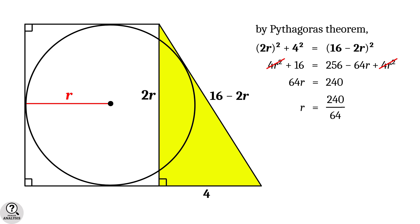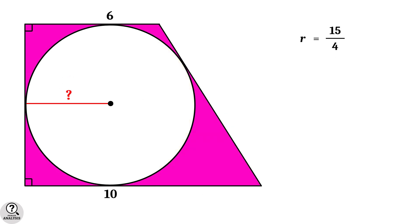That is, r is equal to 240 divided by 64, which is equal to 15 by 4. So, in the diagram of our problem, the radius r is equal to 15 by 4 units, which is equal to 3.75 units. And that is the solution we are looking for.